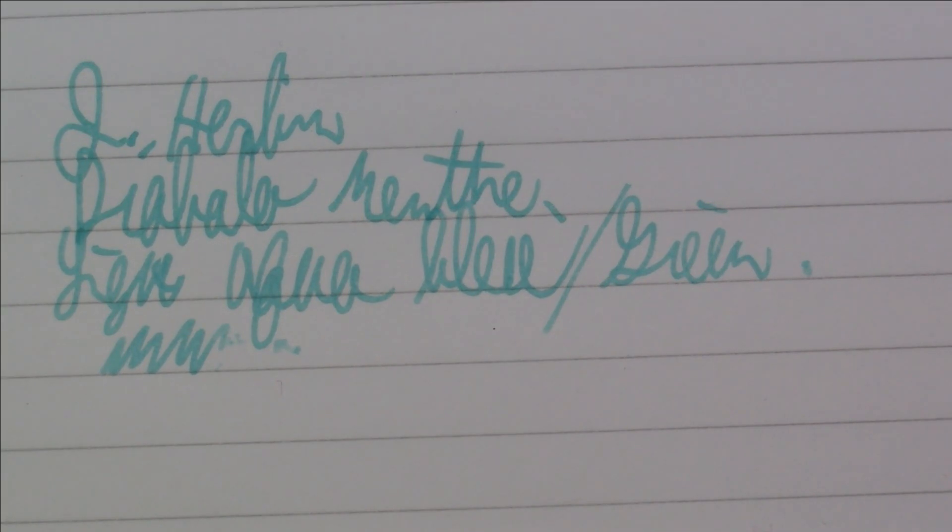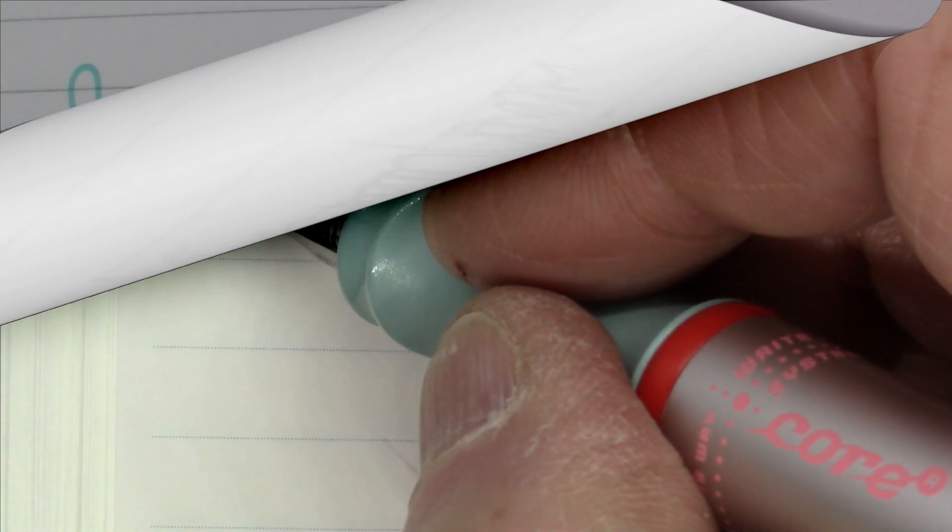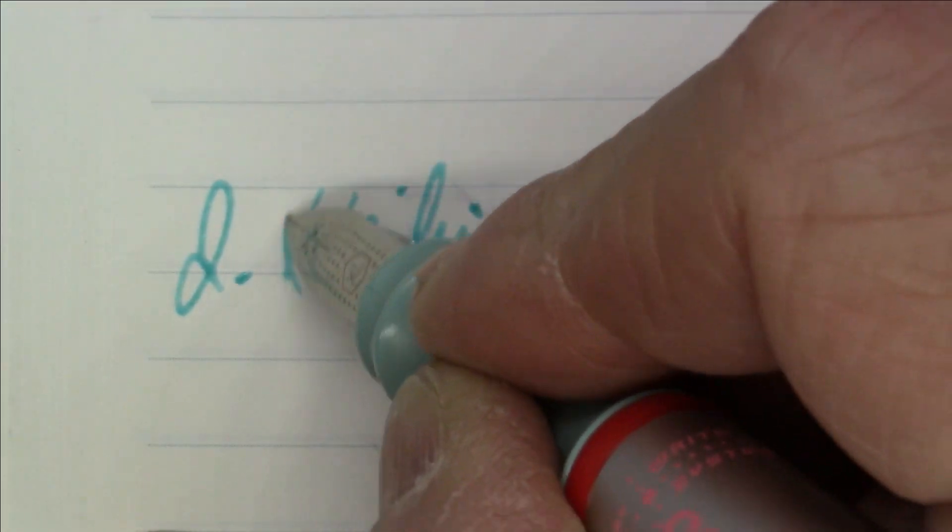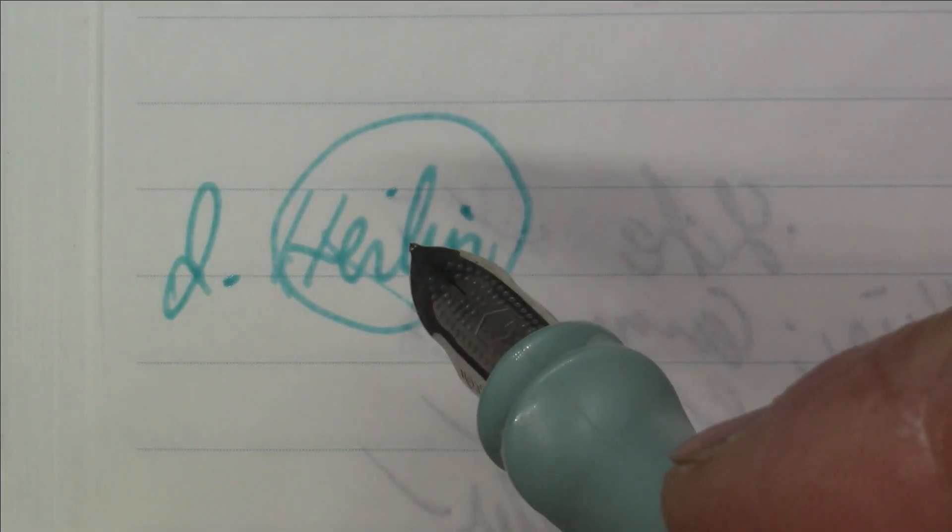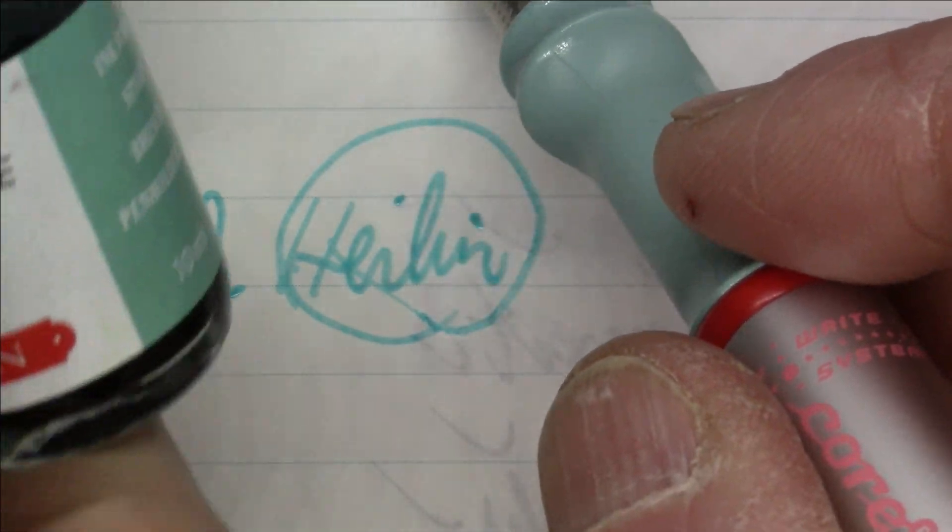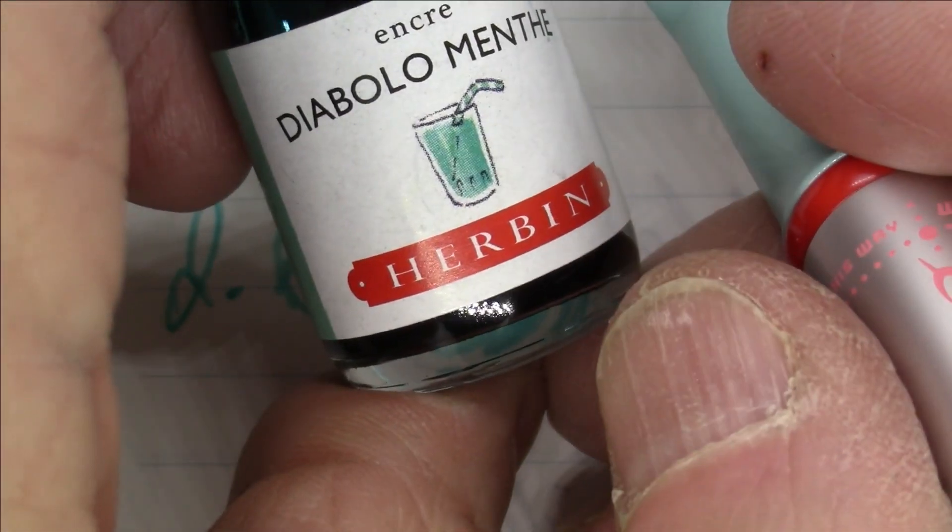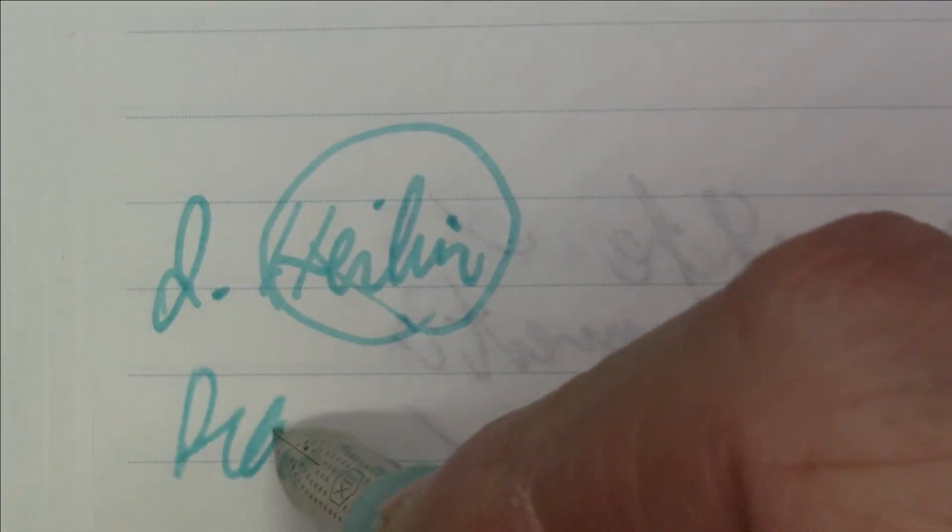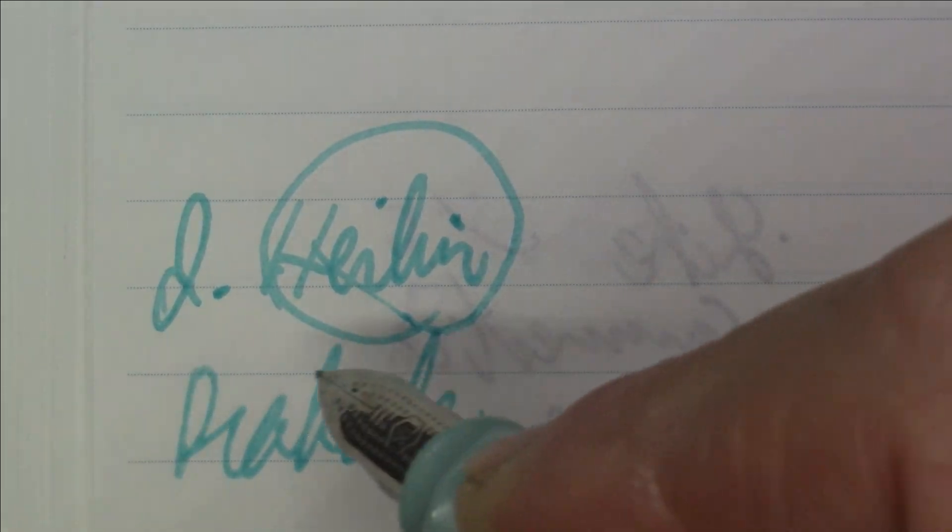All right, like we said, this is J. Herbin—or really should we say Herbin? They're not actually branding themselves J. Herbin anymore, they're just using Herbin on newer bottles the last few years. Anyway, they're just saying Herbin, not J. Herbin. Diablo Menthe.